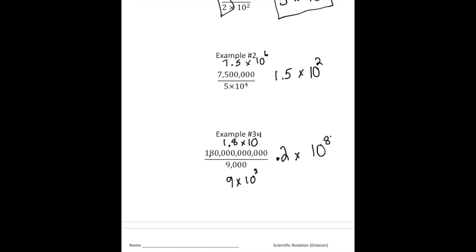Now, this is not written in scientific notation, right? Because this number here, the 0.2 is less than 1. So I'm going to multiply it by 10 to make that a 2. But if I multiply this by 10, I need to subtract 1 from here. So it's going to be 2 times 10 to the 7th power. And there's your solution.